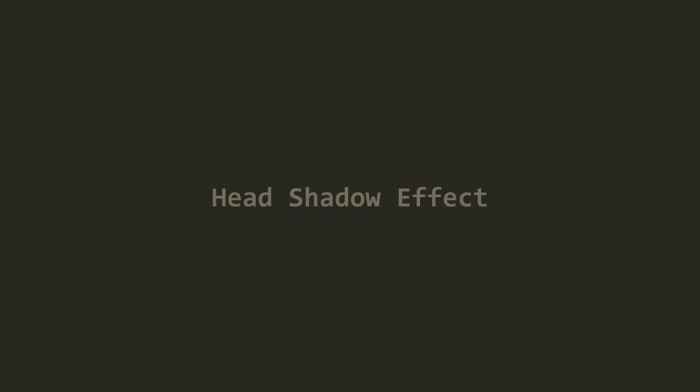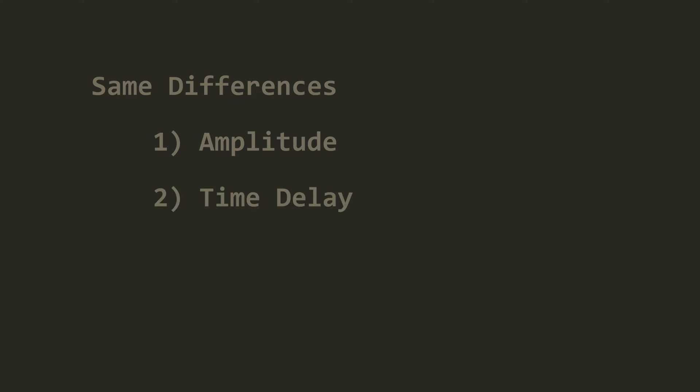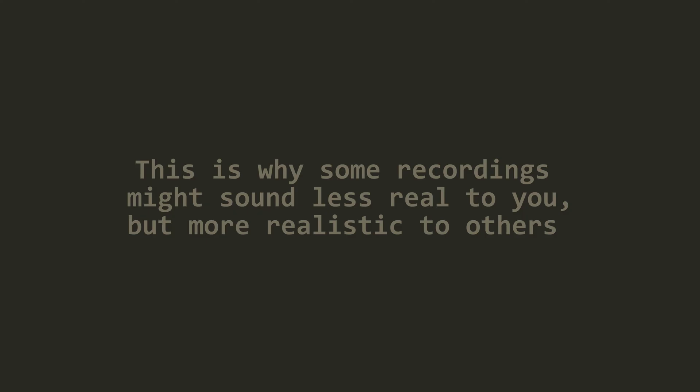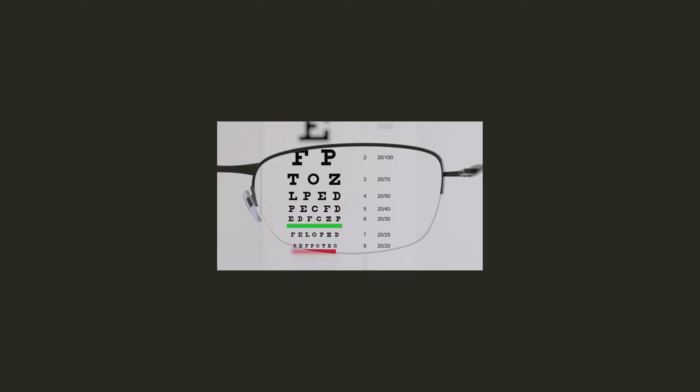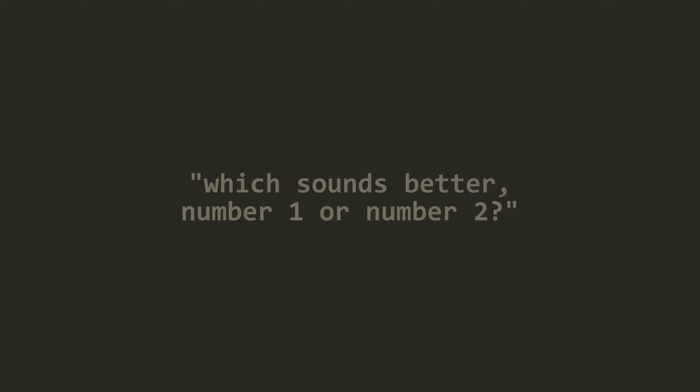There's also something known as the head shadow effect. The sound on your left doesn't just go around your head to reach your right ear — it goes through it as well. As the sound moves through your head, it gets shaped similarly: lower amplitude, a time delay, and lower frequency compared to the sound heard by your left ear. Every person has a uniquely shaped head with different bone structures, fat-to-muscle ratios, and skin thickness, so different binaural recordings may sound more or less realistic depending on how closely the geometry of the recording dummy head matches your own.